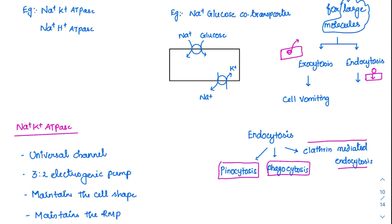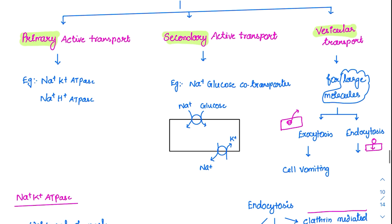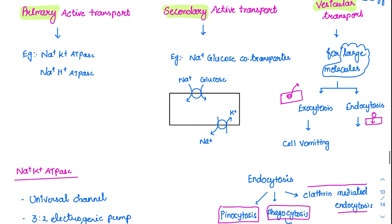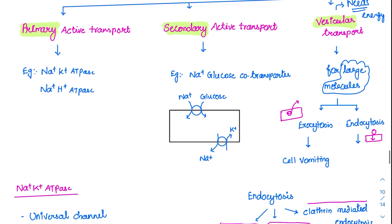Endocytosis is of three types: pinocytosis, phagocytosis, and clathrin-mediated endocytosis. Pinocytosis is endocytosis of liquids like water — also called cell drinking, as if the cell is drinking. Phagocytosis is for solid substances — called cell eating, the cell eats solid substances. Vesicular transport also needs energy, which is why it is included under active transport.